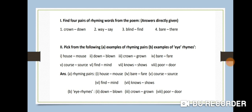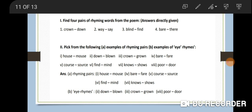Eye-rhyme means the spelling looks the same but the pronunciation is different. For example: d-o-w-n and b-l-o-w-n — for our eyes both have o-w-n, so we think they rhyme. But their pronunciation is totally different: 'down' vs 'blown'. So that is called an eye-rhyme. Examples of eye-rhymes: down/blown, crown/groan, poor/door — different pronunciation but similar spelling.